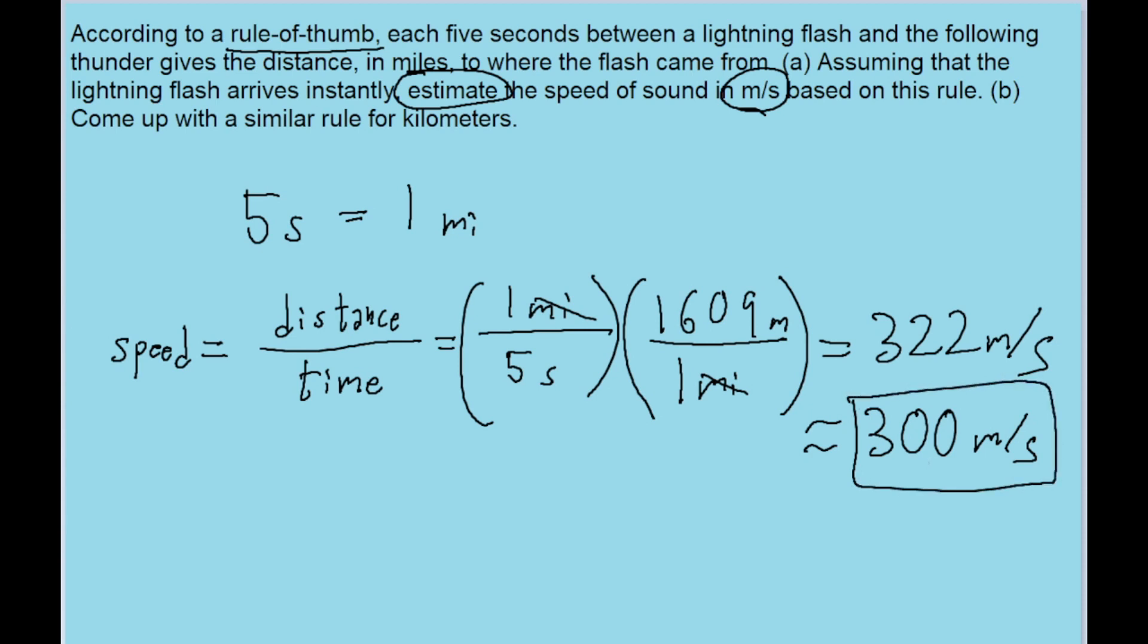This is probably the answer the textbook is looking for. But I want to note that the true speed of sound can change depending on climate and other conditions, ranging from about 330 to 343 meters per second. So this estimate isn't actually bad. Now let's look at part B, which asks us to come up with a similar rule for kilometers instead of miles.